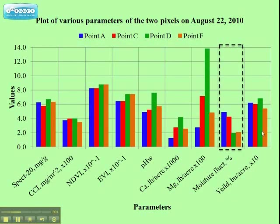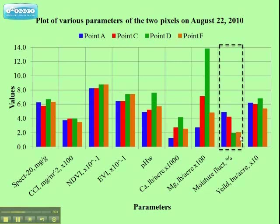This graph shows the summary of the study. A number of parameters are plotted to compare the results found at four different field points noted as points A, C, D, and F. On walking through the field, it was found that points A and C were more wet than points D and F. The moisture fluctuation bars are higher at points A and C.